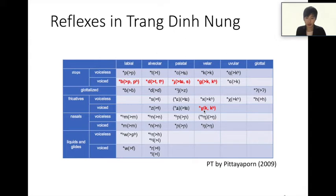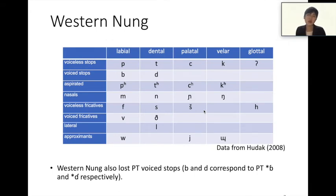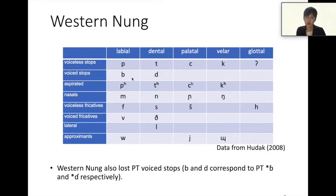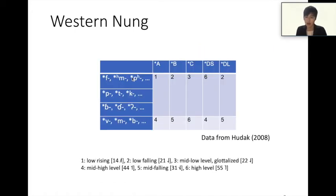I will explain the relationship between the split and tone by comparing etyma. To show that this one-into-two split phenomenon in Chanding NUN is not common in NUN varieties, I will cite etyma in Western NUN from Gedney's word list. Western NUN voiceless stops ba and da correspond to prototype implosives *b and *d respectively, so Western NUN also lost prototype voiced stops. The tonal split of Western NUN is more complex than that of Chanding NUN in D-S and D-L tones.